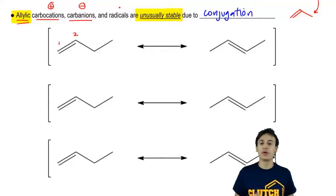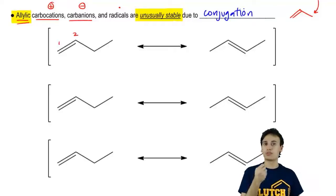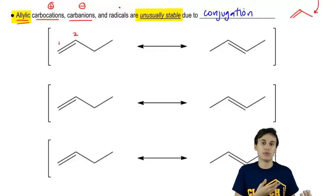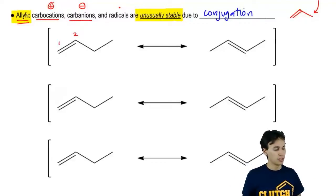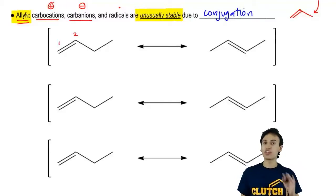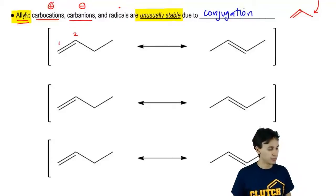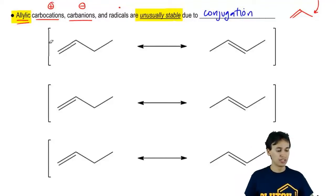Meaning that whereas most carbocations are not very stable, the one next to the double bond will be unusually stable. It will be better than normal. Now what I want to do is refresh ourselves on the resonance structures of these reactive intermediates because we'll be drawing a lot of resonance in this section. Let's go ahead and start off with the simplest situation which is cations.